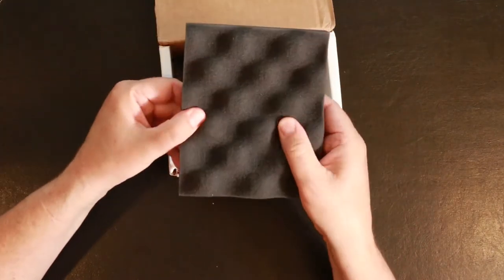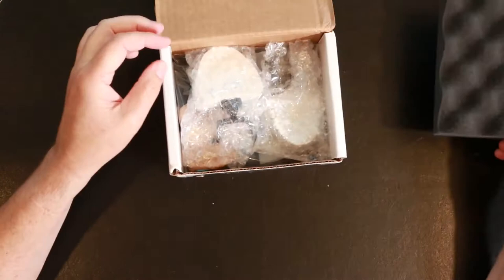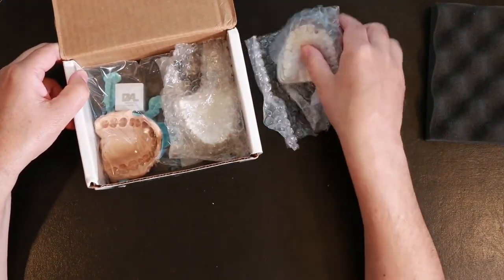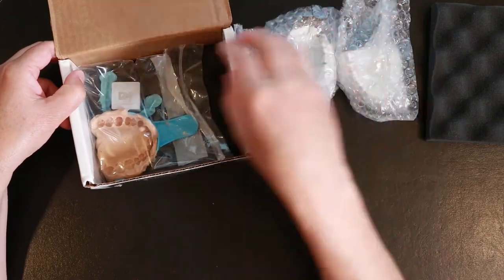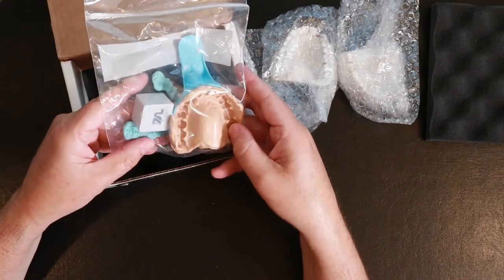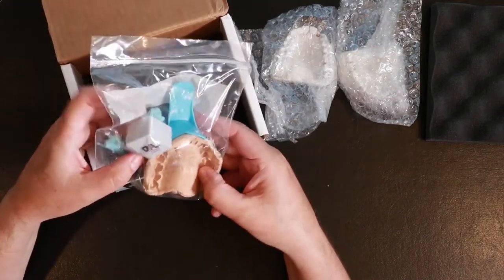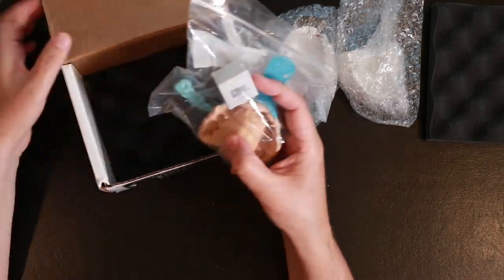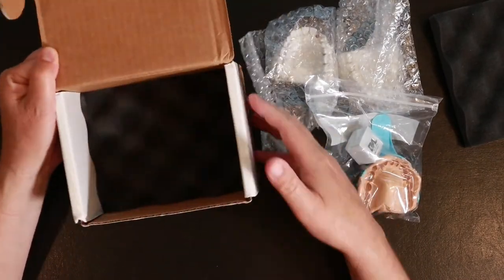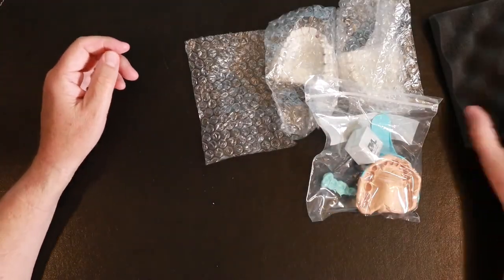It's got some styrofoam egg crate type of packaging. Inside we've got the models wrapped in bubble wrap, and then a bag containing the upper impression that I took and the bite registration and a little box that holds the bridge. And then just more egg crate foam on the bottom of the box. Let me put the box off to the side.